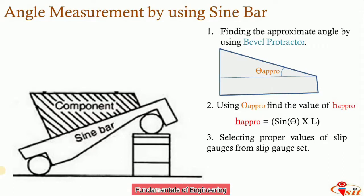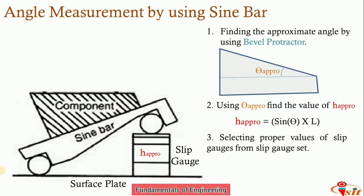Place the sine bar so that one roller rests on the surface plate — which has very good flatness — and the other roller rests on the slip gauge stack of height H_approx. Place the component whose angle is to be measured on top of the sine bar. This setup gives the approximate angle θ_approx, from which we proceed to find the exact angle.